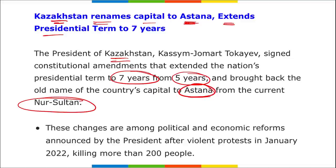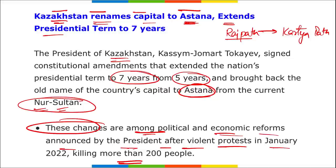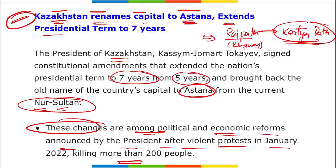These changes in Kazakhstan are among the political and economic reforms announced by the president after violent protests in January that killed more than 200 people. Also remember: in India, Rajpath was renamed to Kartavya Path — Rajpath was also known as King's Way. So two important name changes: Kazakhstan's capital renamed from Nur-Sultan to Astana, and India's Rajpath renamed to Kartavya Path. Kazakhstan's presidential term was extended from five years to seven years.